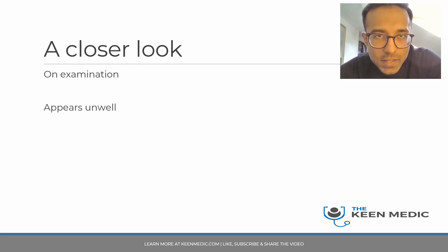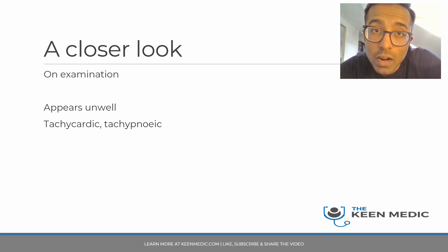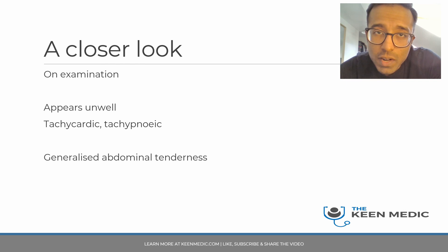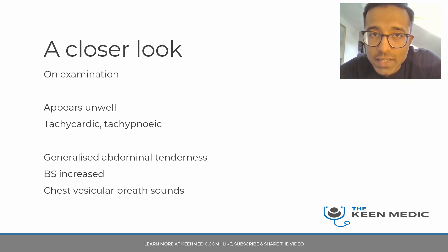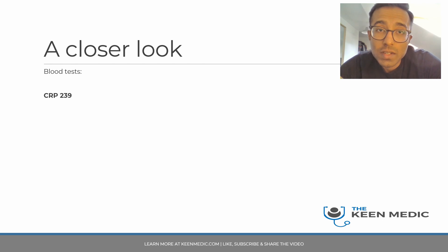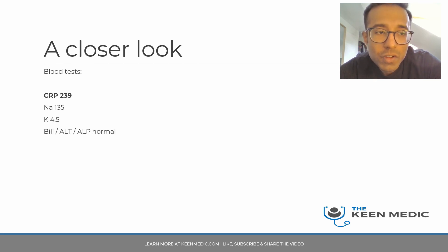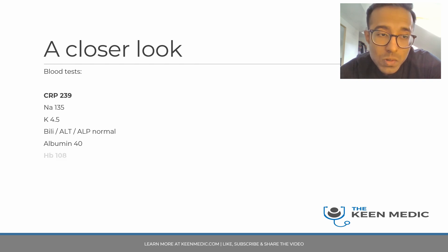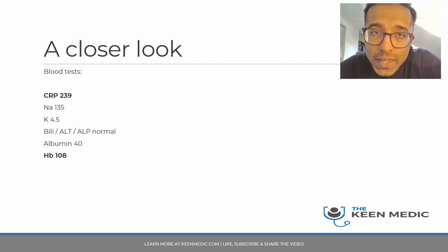On examination, he clearly appears unwell. His heart rate and respiratory rate are compromised and his blood pressure is low — tachycardic and tachypnoeic. He has generalised abdominal tenderness. Bowel sounds are increased but there's no obvious peritonism. Chest examination reveals vesicular breath sounds with good air entry bilaterally. There are no obvious rashes, synovitis, or conjunctivitis of note. On blood tests, his CRP is 239 — significantly raised — indicating high disease activity.